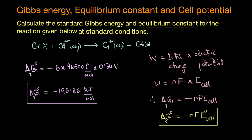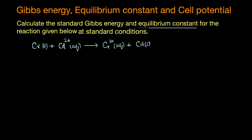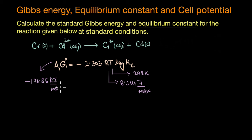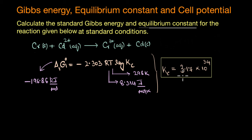The second part asks for the equilibrium constant. We can find Kc directly from the standard Gibbs energy using the thermodynamic equation: ΔG° = −2.303RT log Kc. Substituting ΔG° = −196.86 kJ/mol along with the known values of R and T, we obtain Kc = 3.17 × 10³⁴.